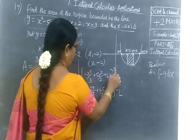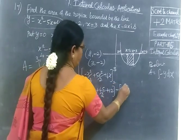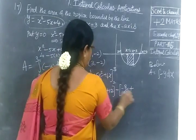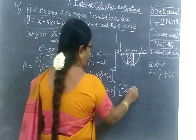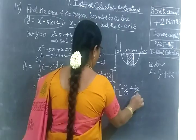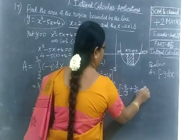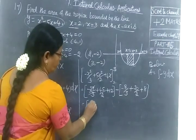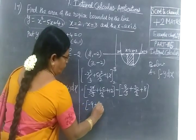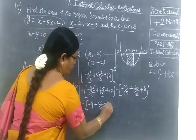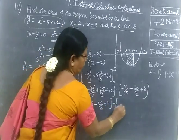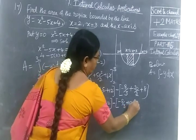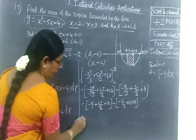Then minus the lower limit: minus 8 by 3 plus 5 times 4 by 2 minus 4 times 2, which gives minus 8 by 3 plus 20 by 2 minus 8. So we compute the difference.